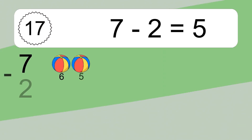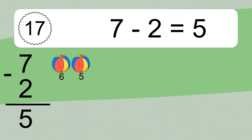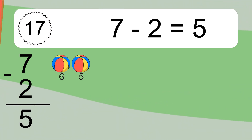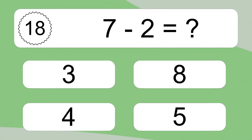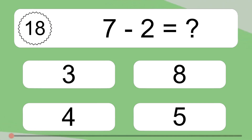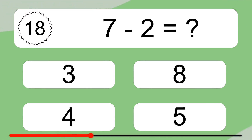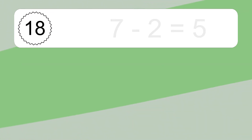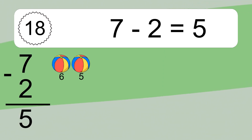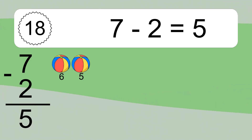7 minus 2 equals 5. Let's count it: 6, 5. 7 minus 2 equals what? 7 minus 2 equals 5. Let's count it: 6, 5.